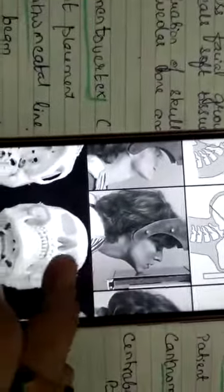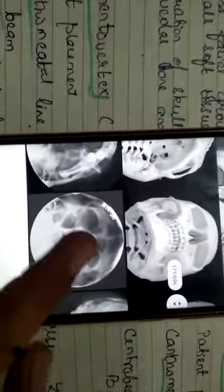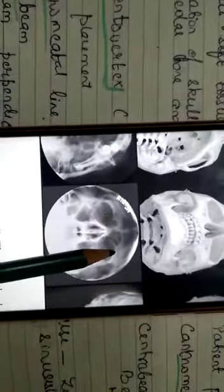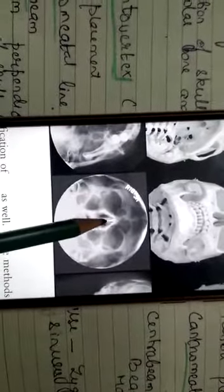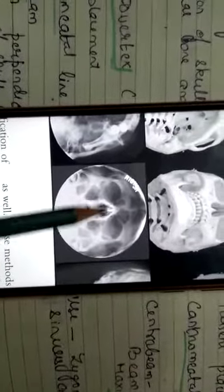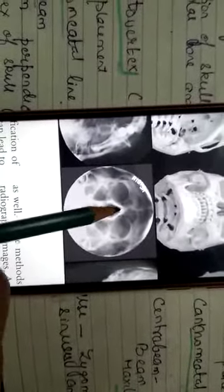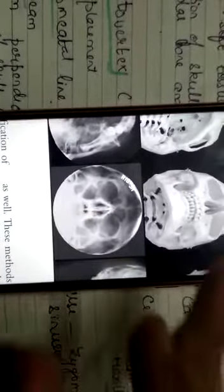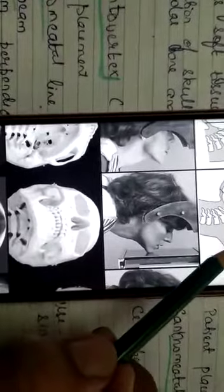In the radiographic view of Water's view, you can see all the paranasal sinuses, the nasal cavity, and the zygoma. It is used for zygomatic fractures, paranasal sinus pathology, and nasal cavity examination. This is Water's view, also called occipitomental projection or paranasal sinus view.